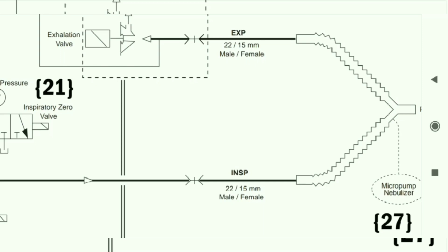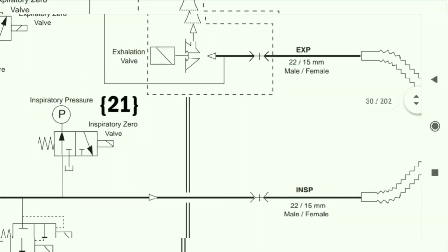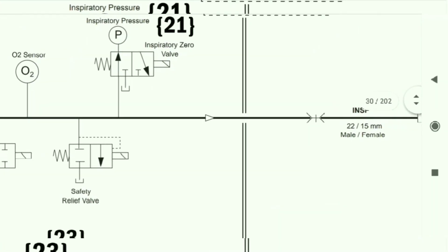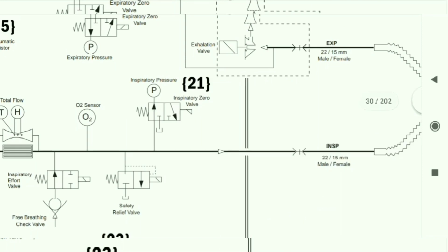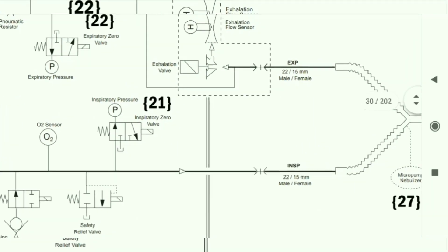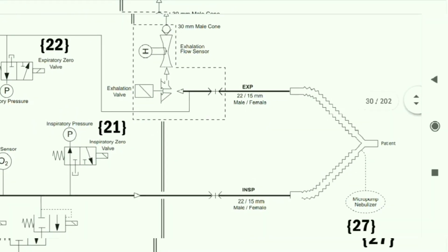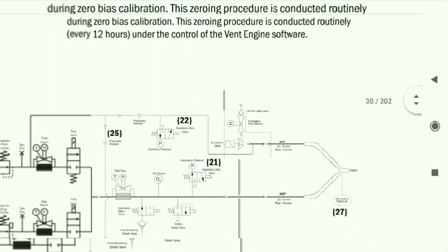From the inspiratory section, air goes to the patient via this line. From the expiratory side, the exhalation air comes out. This completes the block diagram of the ventilator's patient circuit.